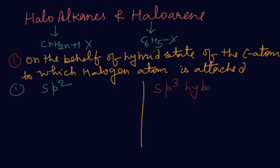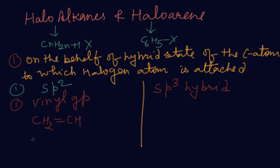This has been asked in a number of exams. Let me explain SP2 first. The first example is the vinyl group. The vinyl group is CH₂=CH–. If a halogen atom is attached directly to this vinyl group — for example, CH₂=CH–Cl — that means the halogen atom is attached to the carbon bearing unsaturation. This is called vinyl chloride.